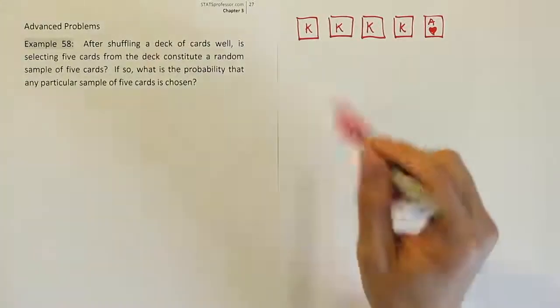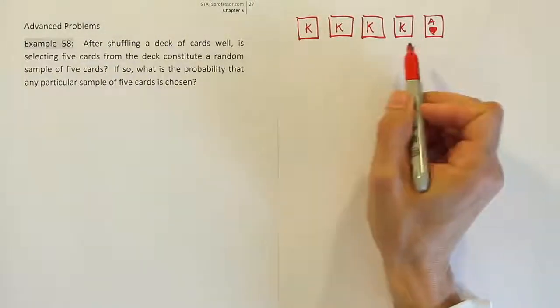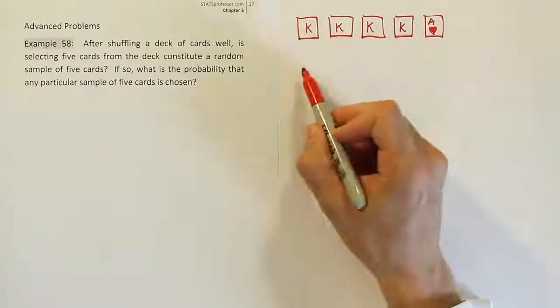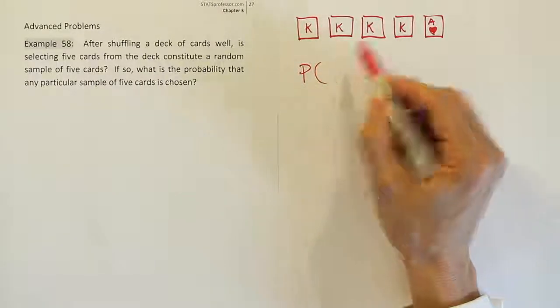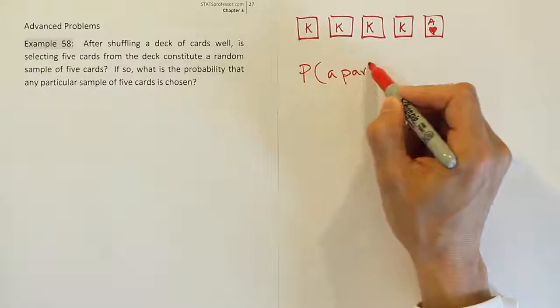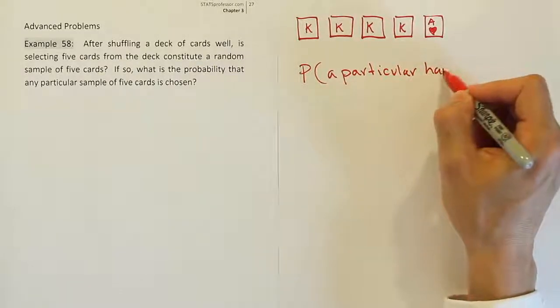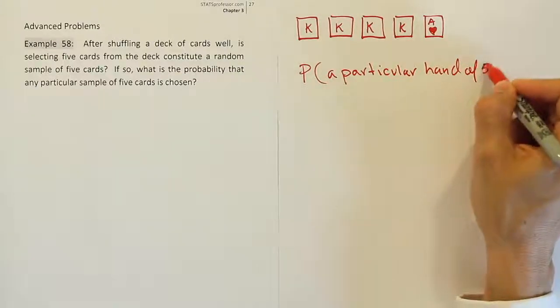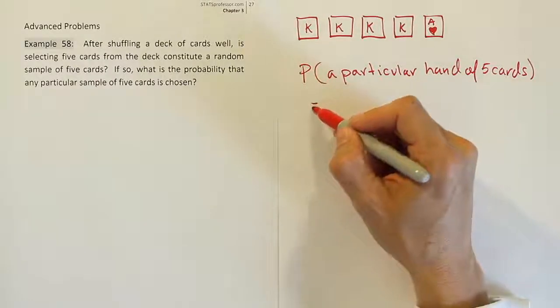Okay, so this is a particular hand. What would be the probability we would randomly grab that hand from the top of the deck? That would be the same probability we grabbed any particular five card hand. The probability of a particular hand of five cards is equivalent to finding the probability we get that hand.